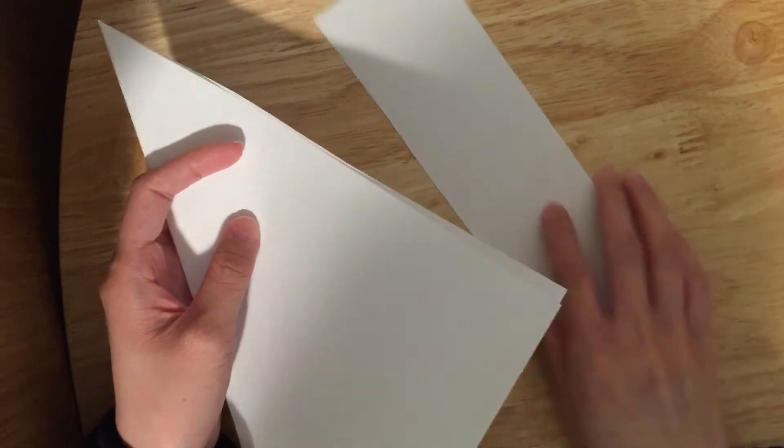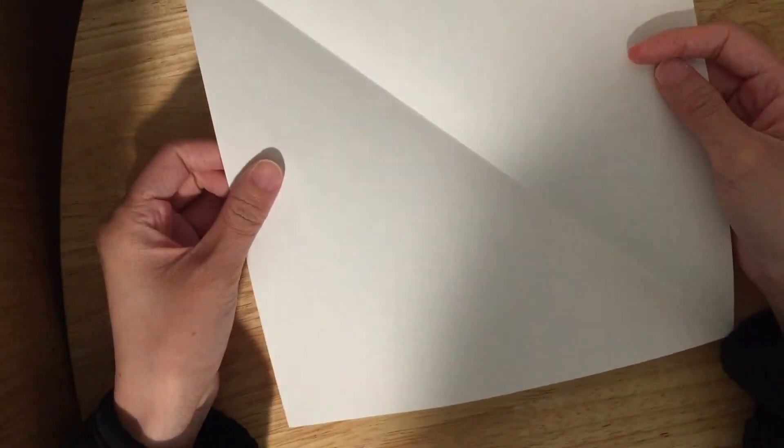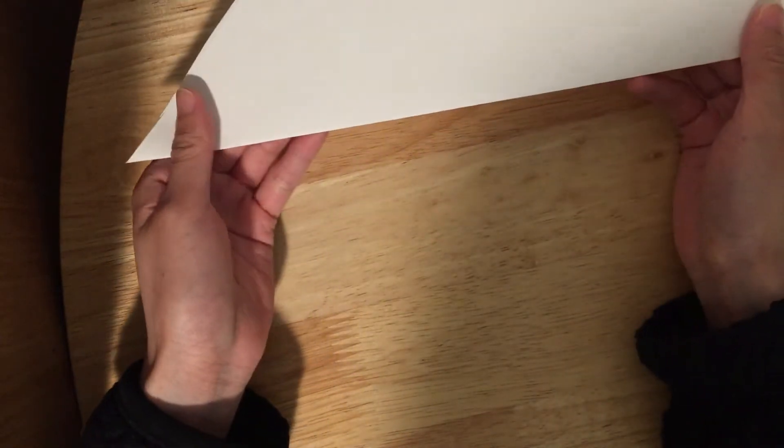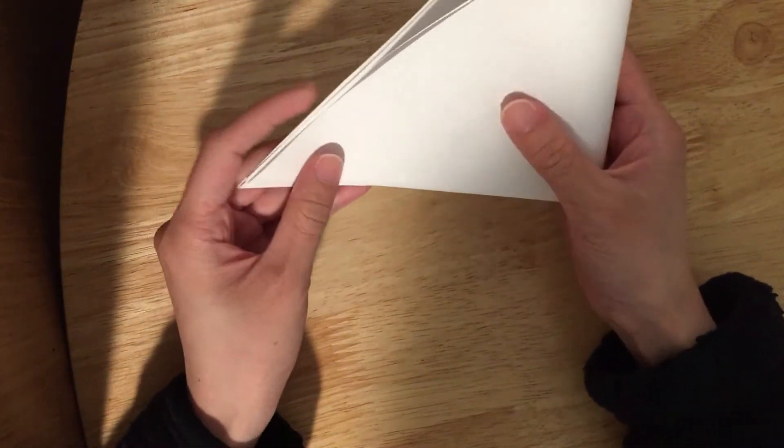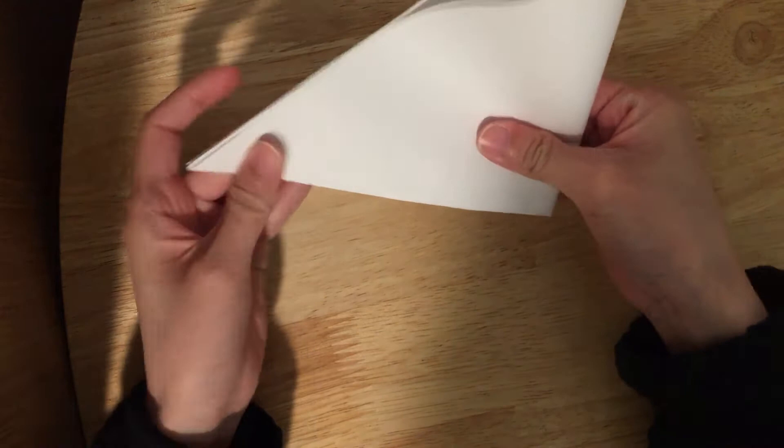Okay, after this, we have a square shape paper. And let's fold it back into a triangular shape. And then we're gonna fold it again into another triangular shape.